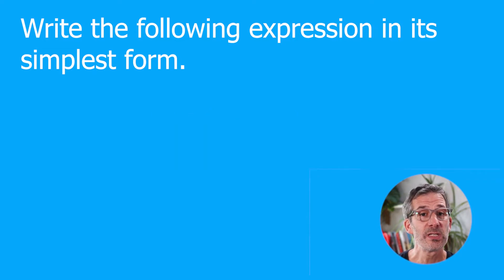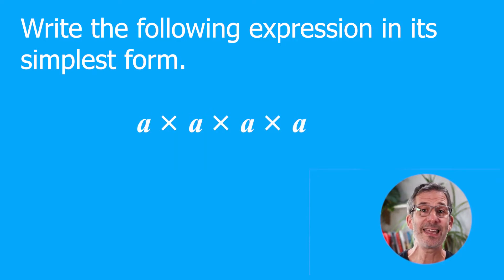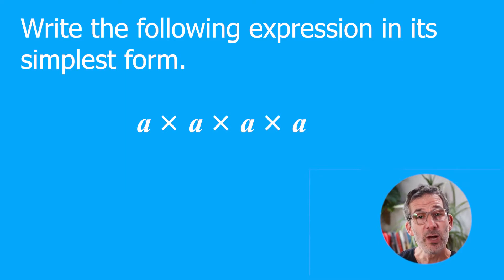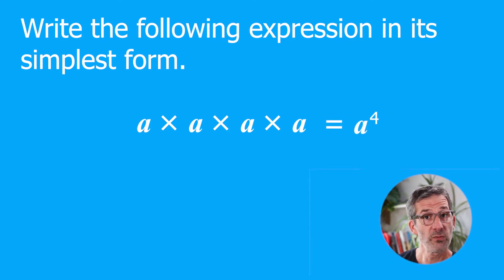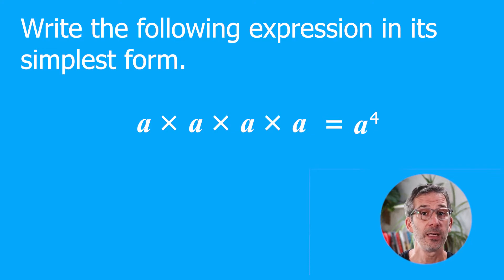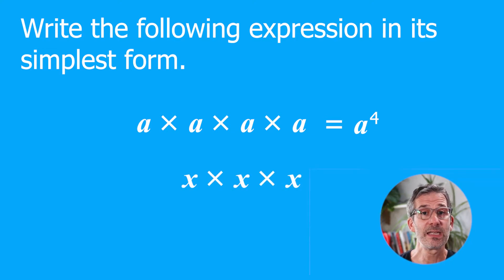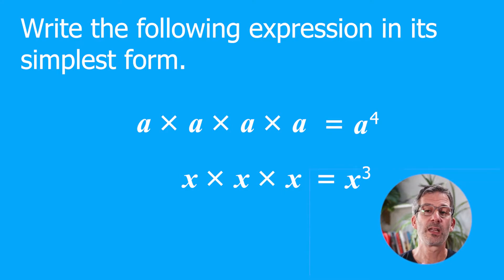What if there are no numbers and you're just multiplying letters together, like a × a × a × a? Here we use the laws of indices, so that would be a to the power of 4 — the 4 representing the number of times we multiply by a. Similarly, x × x × x is x to the power of 3, or x cubed.